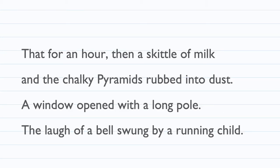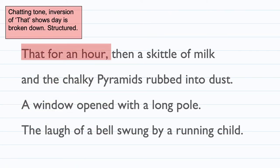The poem goes on to say: 'for an hour, then a skittle of milk, the chalky pyramids rubbed into dust, a window opened with a long pole, the laugh of a bell swung by a running child.' They are taken away from the magical place and brought back into the classroom — it's very sensory. We're going to highlight 'that for an hour' because the inversion shows the day is broken down and very structured, just as it would be in primary school.